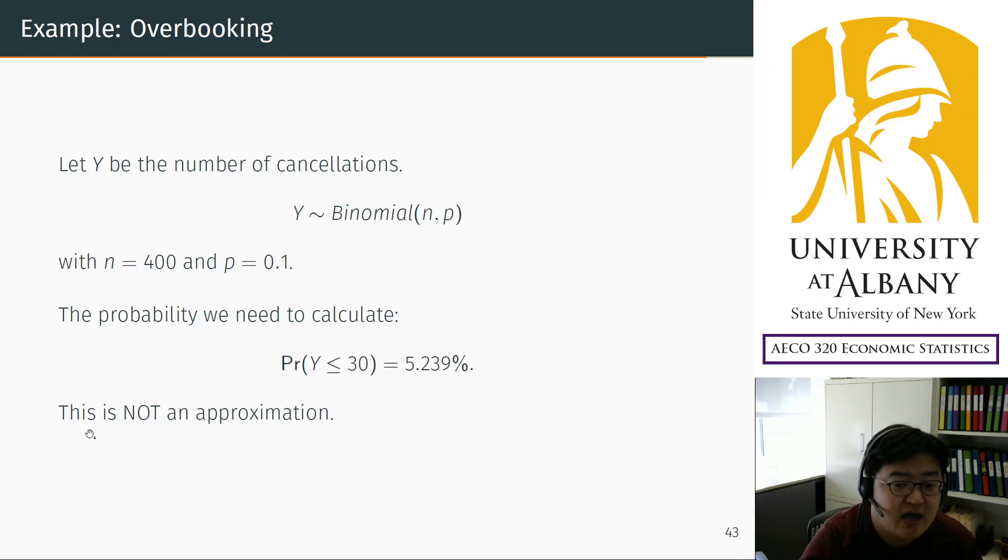And if you apply the complicated formula from the binomial distribution, you will get 5.239%. This is not an approximation. Of course it's rounded, but except for that, there is no error. Except for the rounding error, it is the exact probability. This is the true probability.